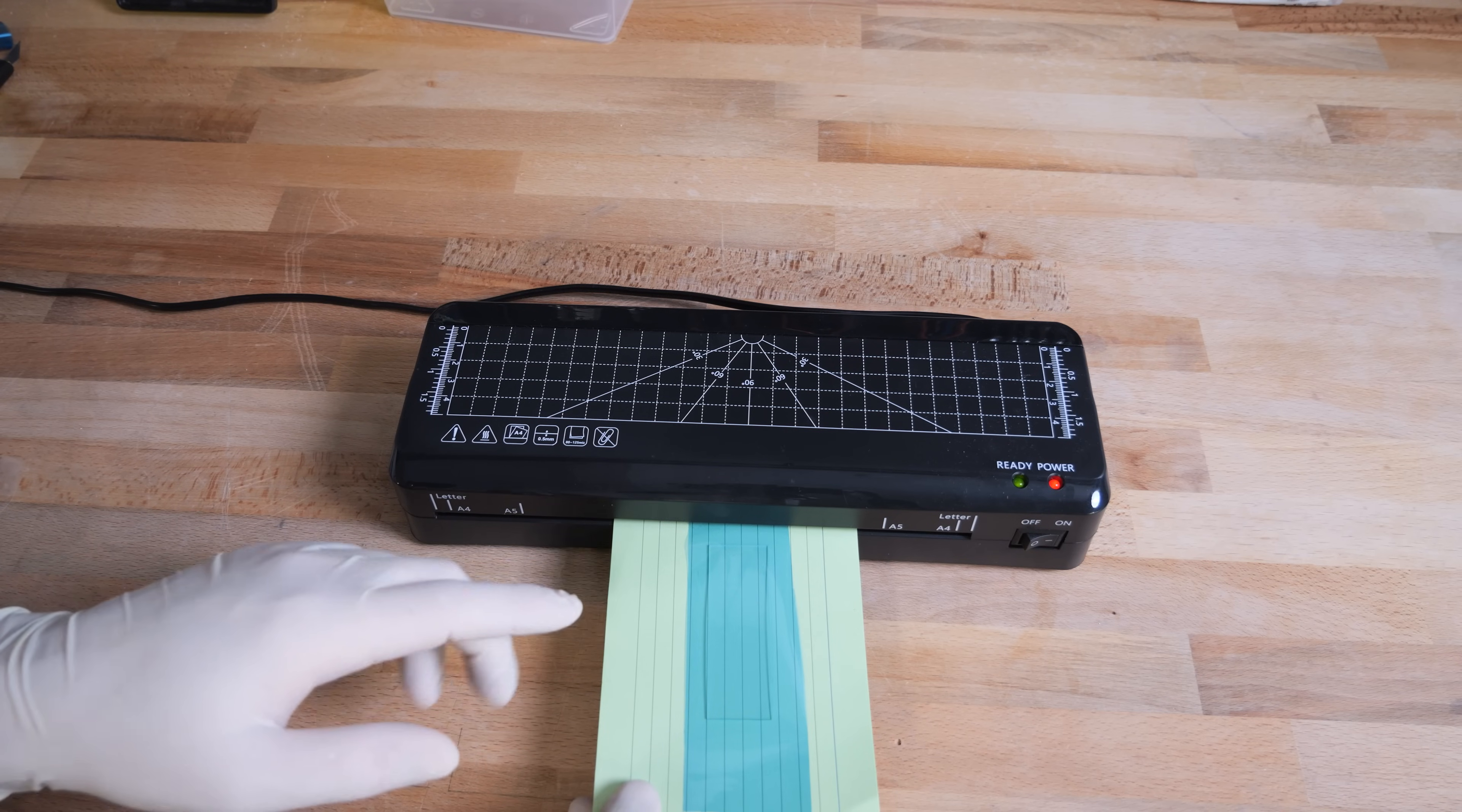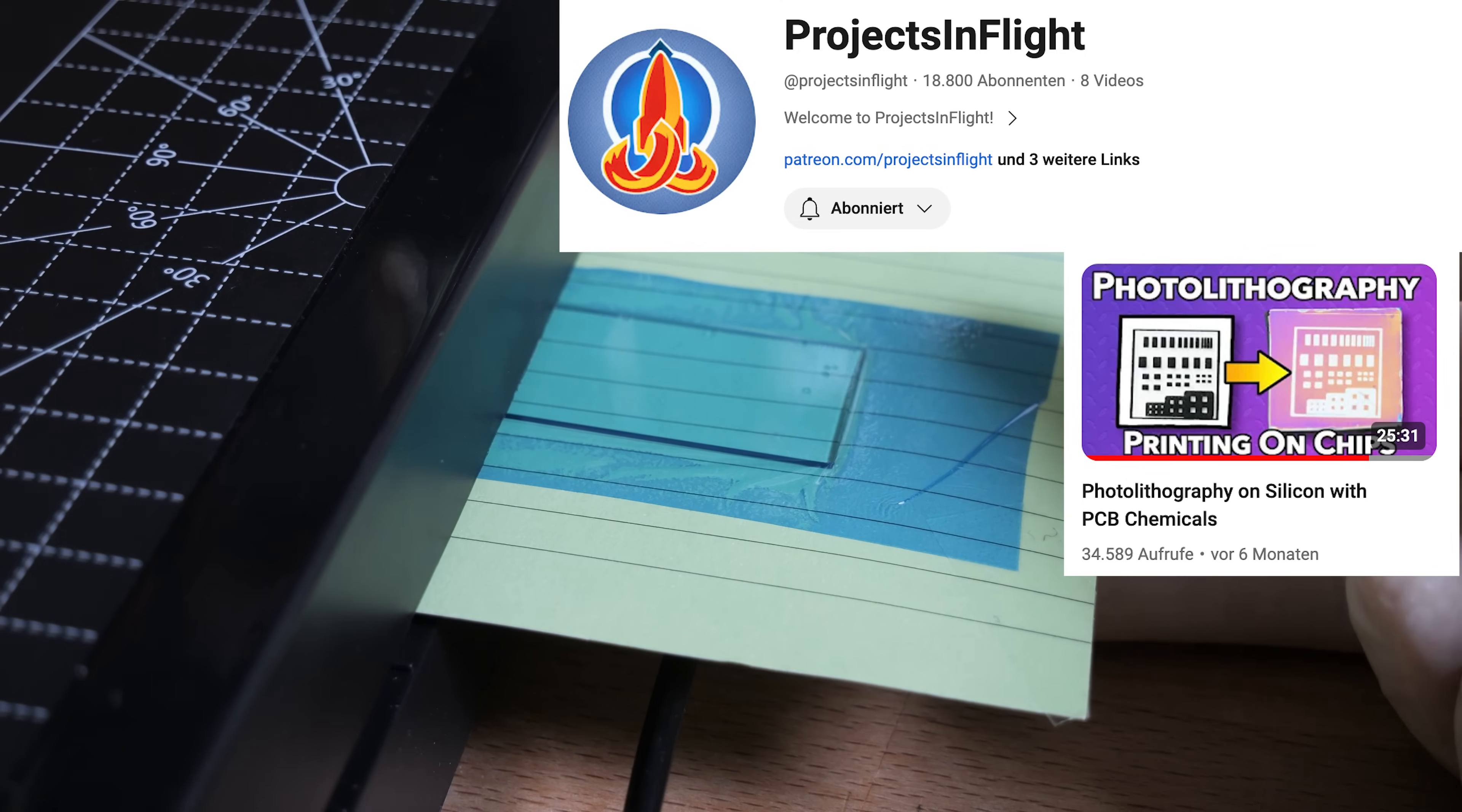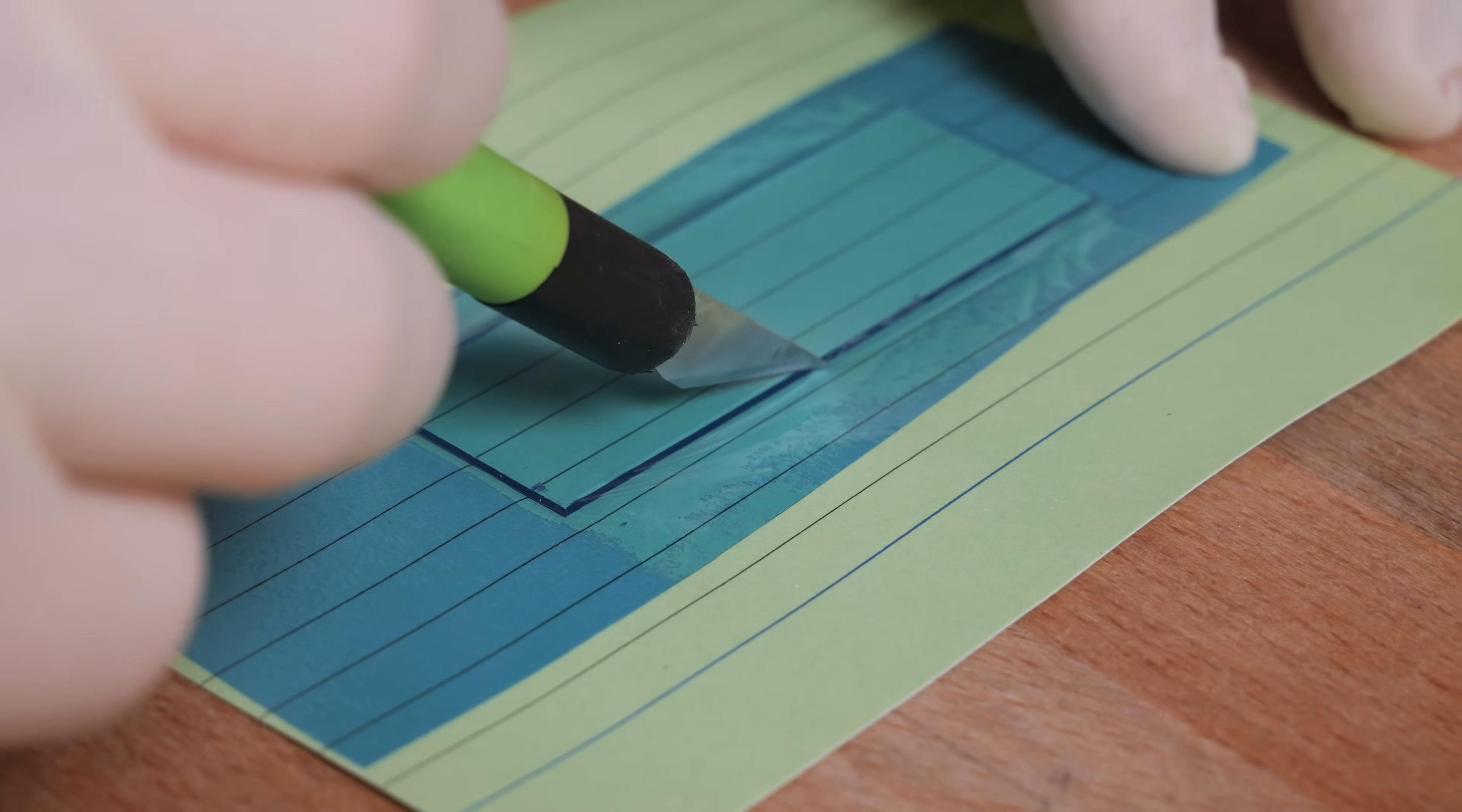The paper with the glass slide and the photoresist can then be carefully inserted into the laminator. At this point I would like to thank the YouTube channel Projects in Flight for his fantastic video on photolithography for etching silicon. His tips on handling the dry film photoresist have probably saved me a lot of time. All of his videos are highly recommended and I've linked the channel in the video description. With a little bit of luck you get a perfectly smooth surface without any air inclusions between the photoresist and the glass surface. I then just cut away the paper and the excess photoresist to get the glass slide which is ready to be exposed.